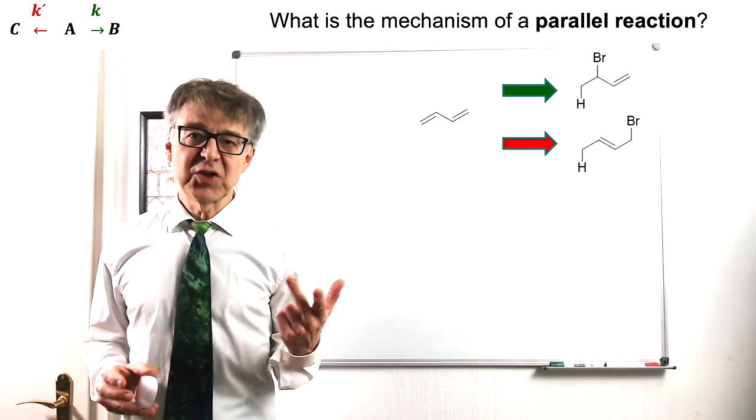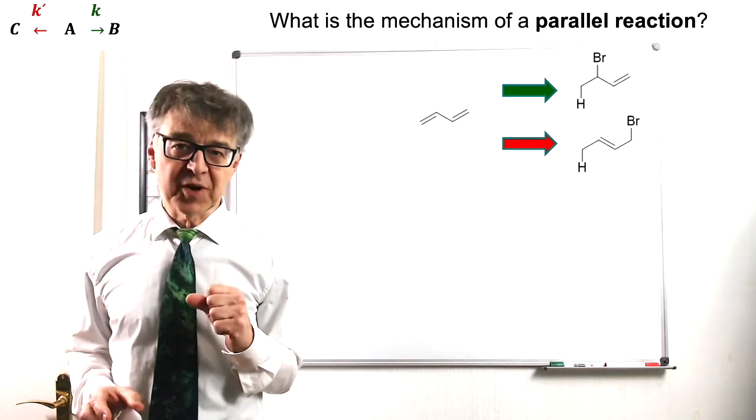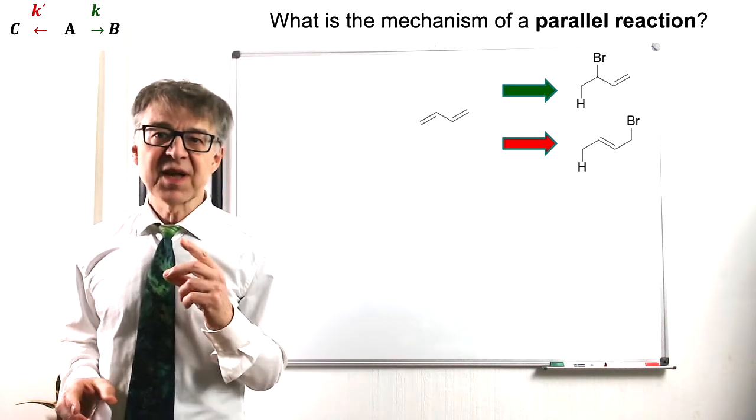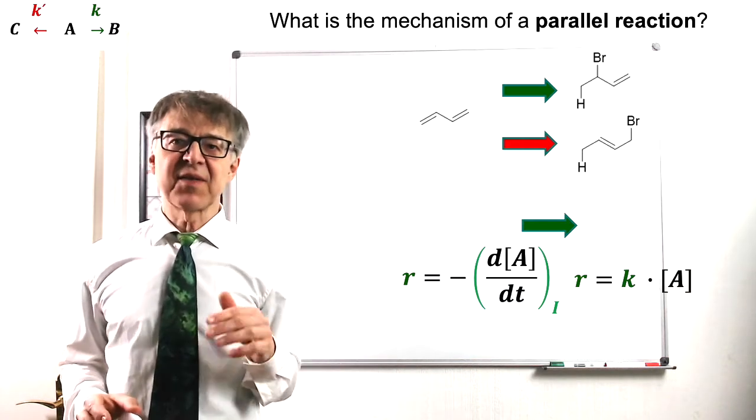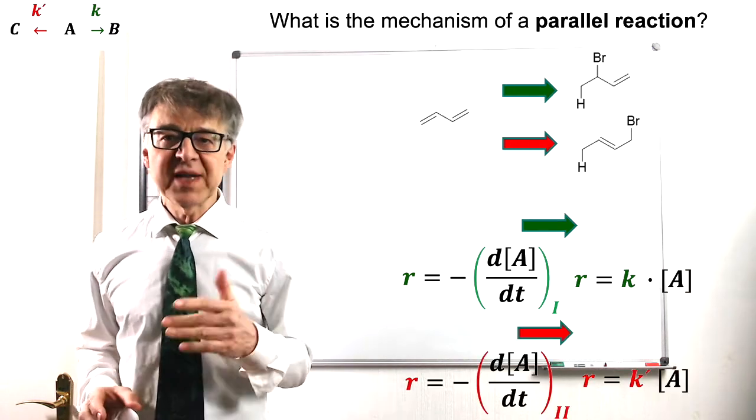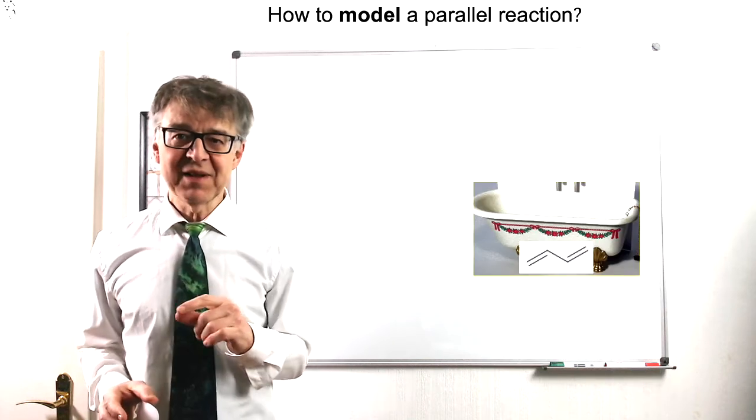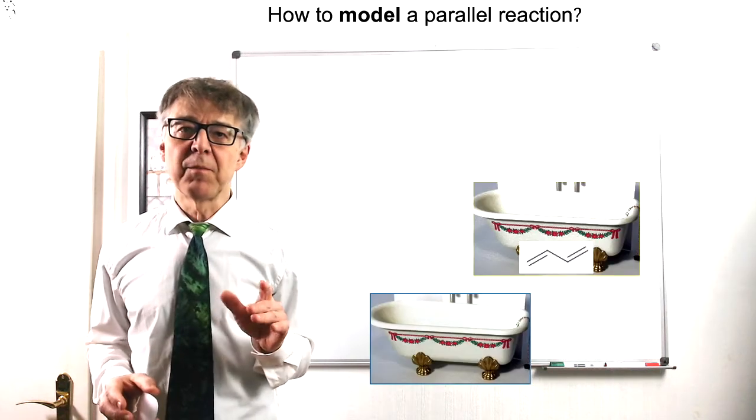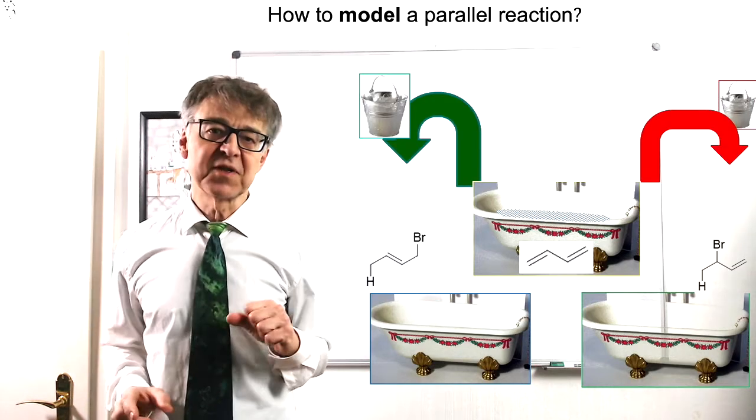Butadiene can add hydrogen bromide to either the 1,2 or 1,4 product. This is an example of a parallel reaction. The reactant A reacts in the green elementary reaction to product B and in the red elementary reaction to product C. In the water model, water is transferred from bathtub A to bathtub B and C using two different vessels.